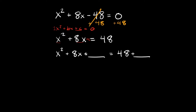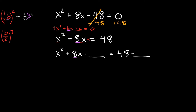To find that number, use the formula (½b)² or (b/2)². Here b is the coefficient next to x, which is 8. So: ½ × 8 = 4, and 4² = 16. So we plug 16 into both blank spaces. Now we can simplify: x² + 8x + 16 = 48 + 16 = 64. Now we have a perfect square trinomial.